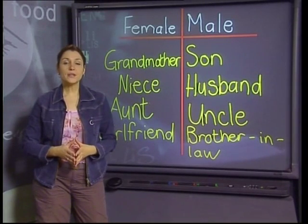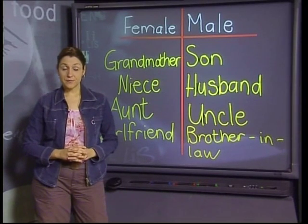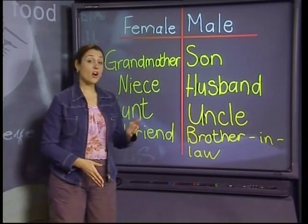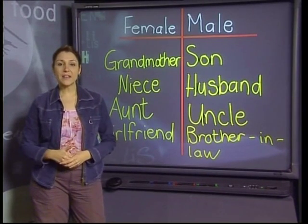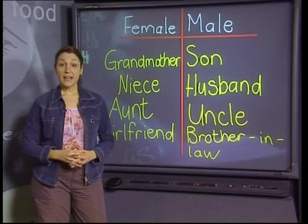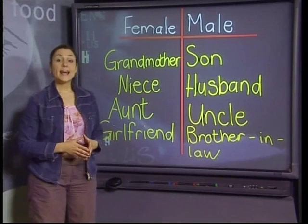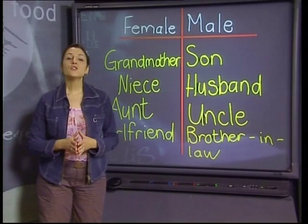Niece is a gender noun — a niece is a female who is the daughter of either your sister or your brother; a niece could never be male. A husband is the male person to whom a woman is married. An aunt is the sister of either your father or your mother — she is always female; the male version of an aunt is an uncle. And girlfriend is a feminine noun, and a brother-in-law is the man to whom your sister is married.